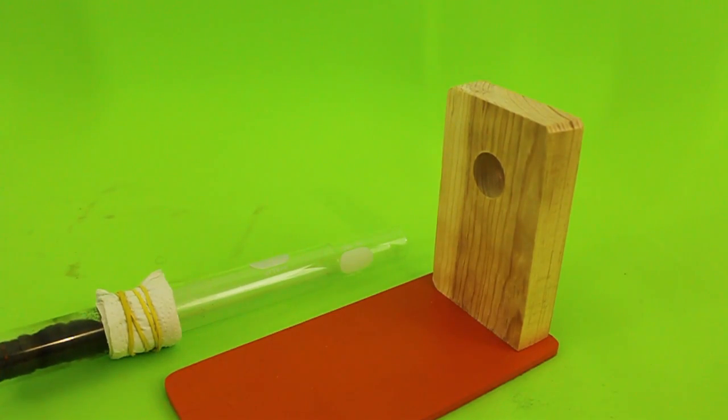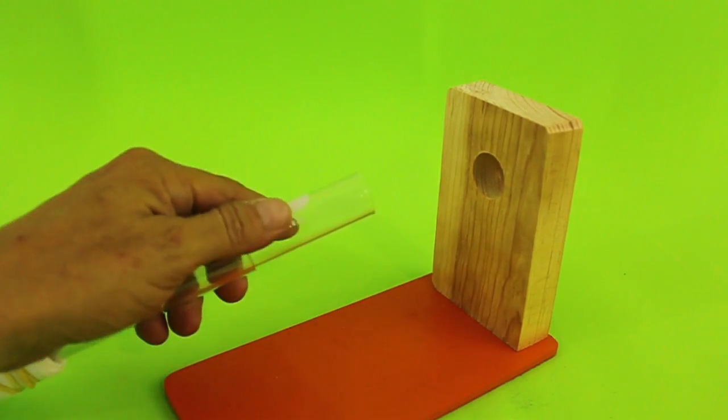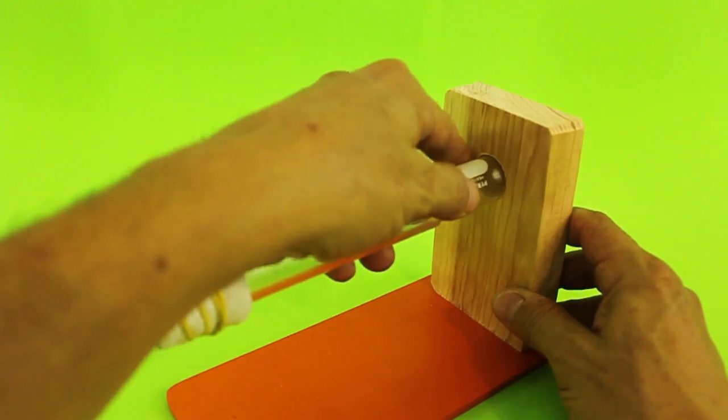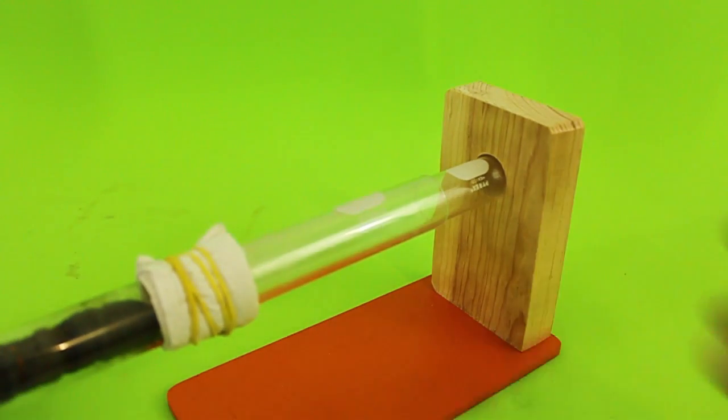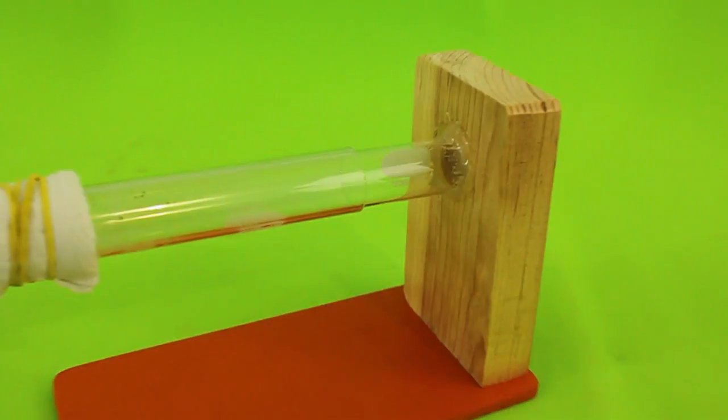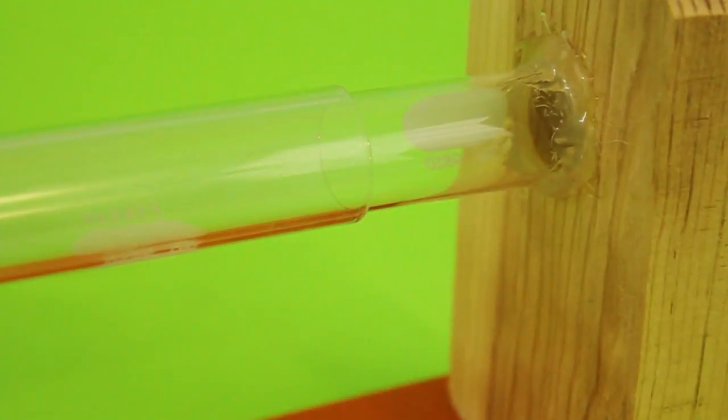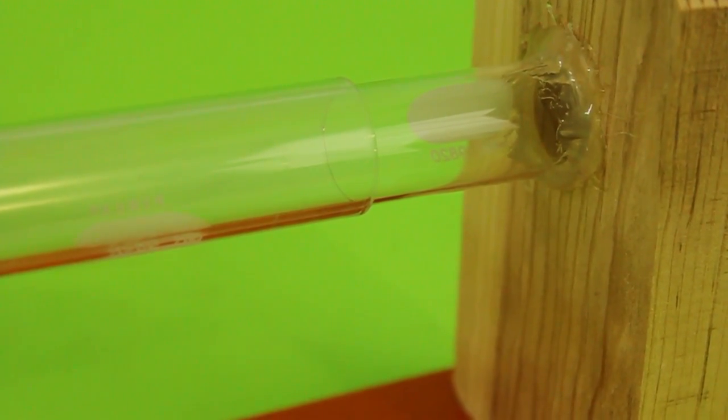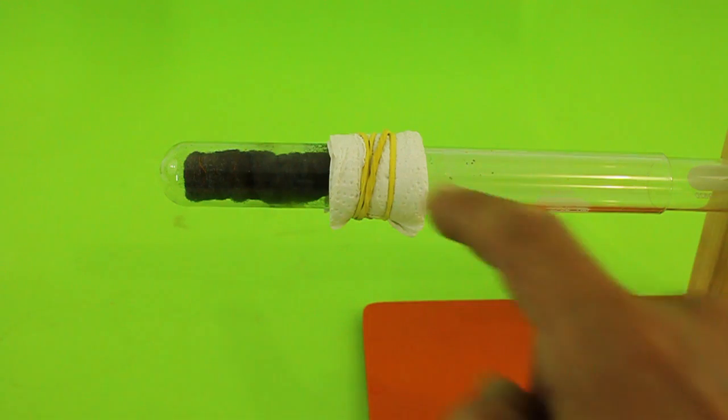In order to finish the motor we need to fix it to a wooden base. The smaller test tube, the piston, is inserted in this hole and fixed using a hot glue gun. Let's add some water and try to start it.